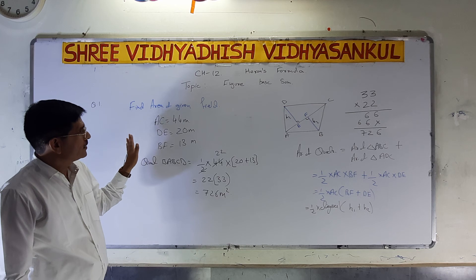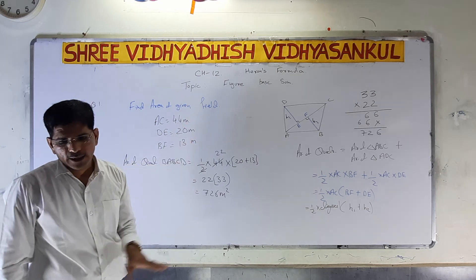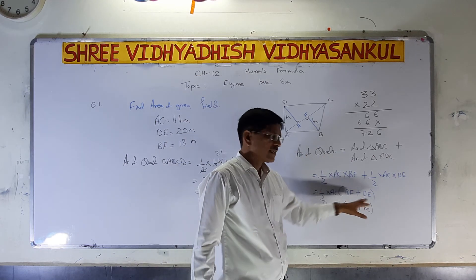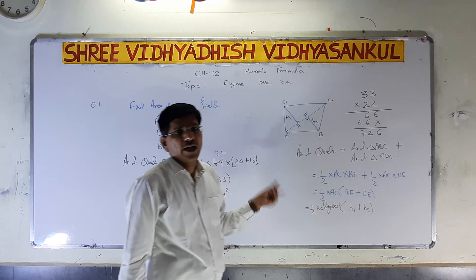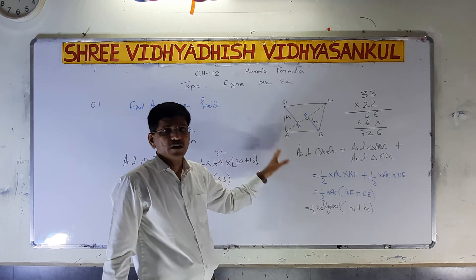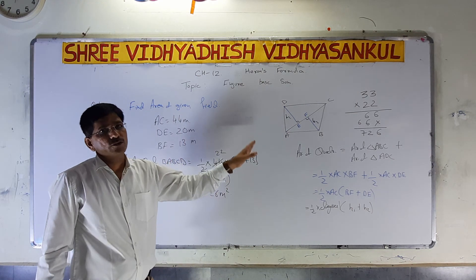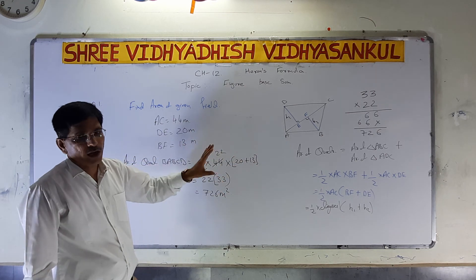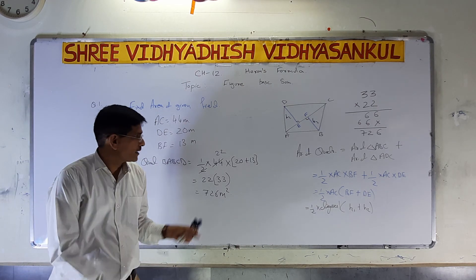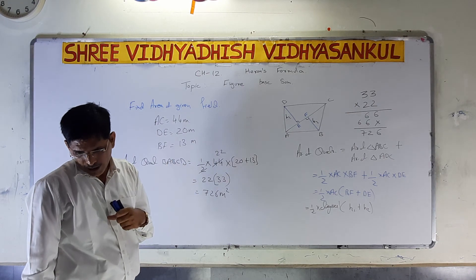I think it is easy when such type of sums are given. In the question a quadrilateral is given, along with two altitudes and one diagonal. When only the diagonal and altitudes are given and the four sides are not given, we use this formula to find out the area of the quadrilateral. It is a textbook-based example and we can understand it properly.